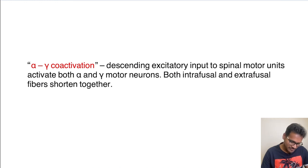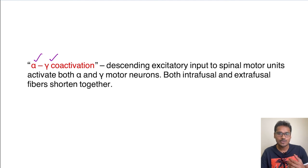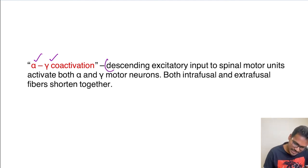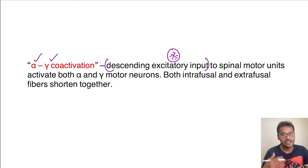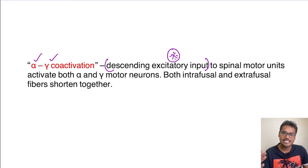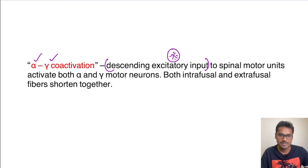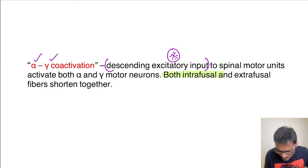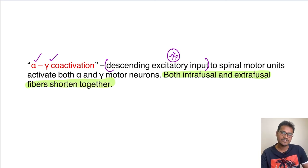There is also a strong relationship between alpha and gamma motor neurons called alpha-gamma coactivation. Descending excitatory input from the brain activates both the gamma motor and the alpha motor neurons simultaneously. When gamma motor activity increases, alpha motor activity also increases naturally via the 1A fibers. This coactivation causes both intrafusal and extrafusal fibers to shorten together, helping increase reflex activity.